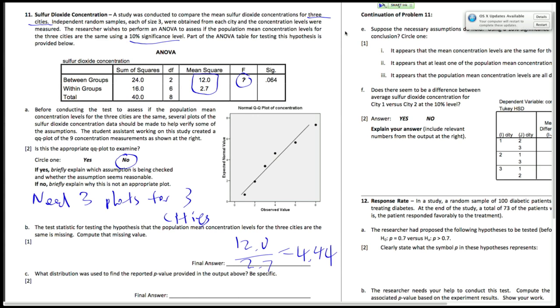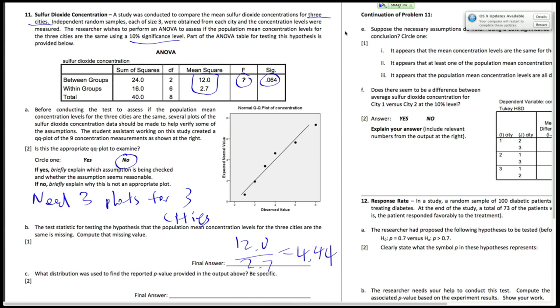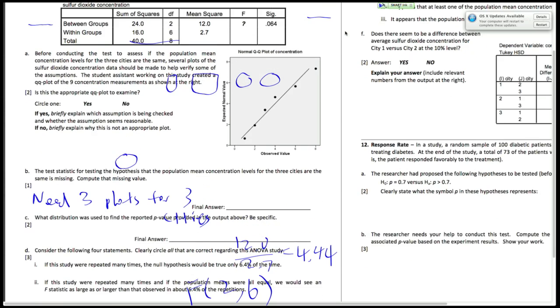Now what distribution was used to find the p-value provided in this output above? So note that it's going to be an F distribution with k-1 and n-k degrees of freedom. And we have k-1 and n-k right here. So it's going to be an F with 2 and 6 degrees of freedom.